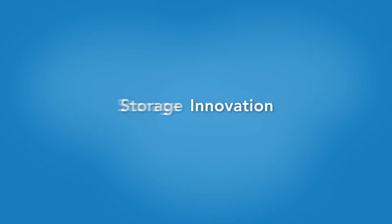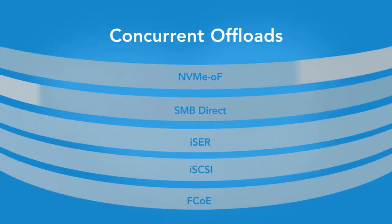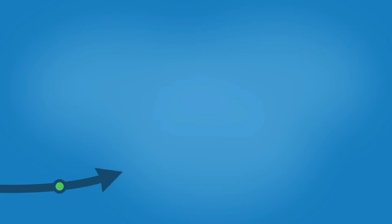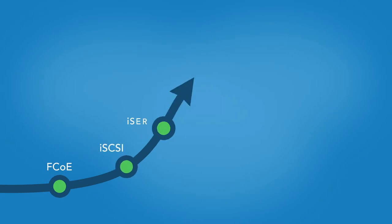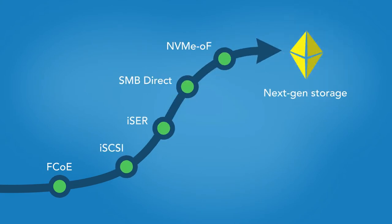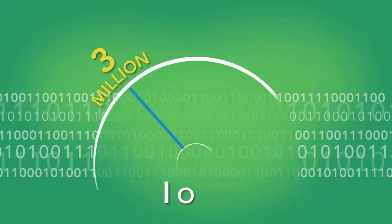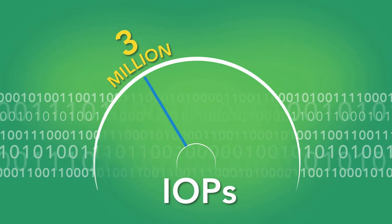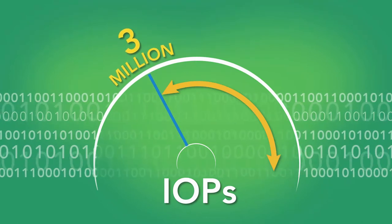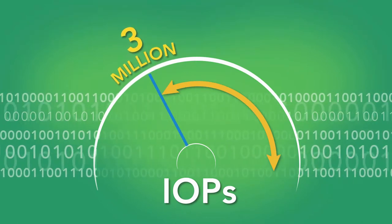Universal storage networking means concurrent offload for all storage protocols. It provides a seamless migration path to next-gen storage, and more than 3 million IOPs with plenty of headroom remaining for virtualized apps.